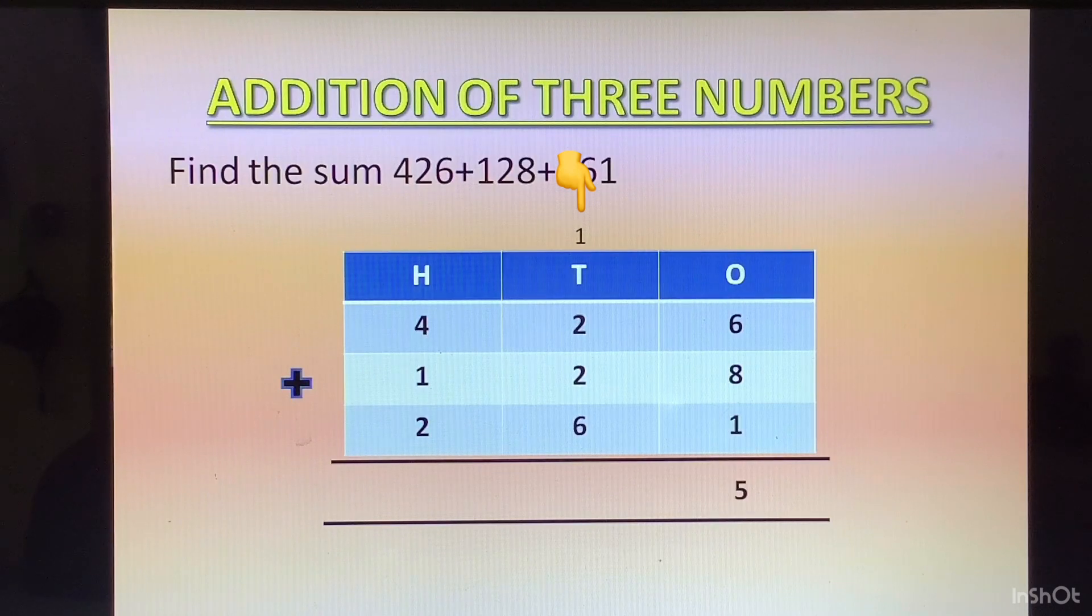In 10's column we have 2 plus 2, 4. 4 plus 6, 10. 10 plus 1 of the carry, 11. 1 will go at the top of 100's column.